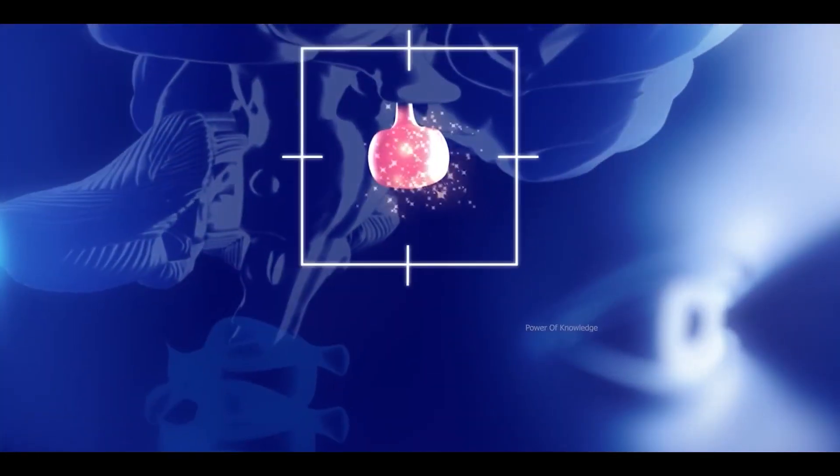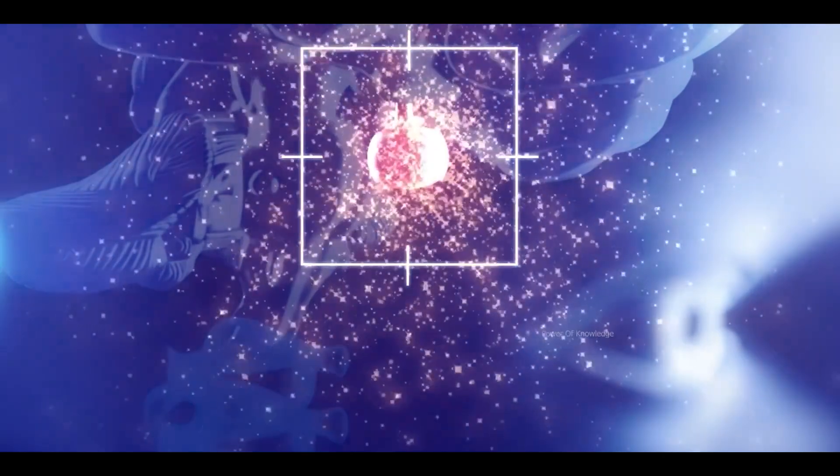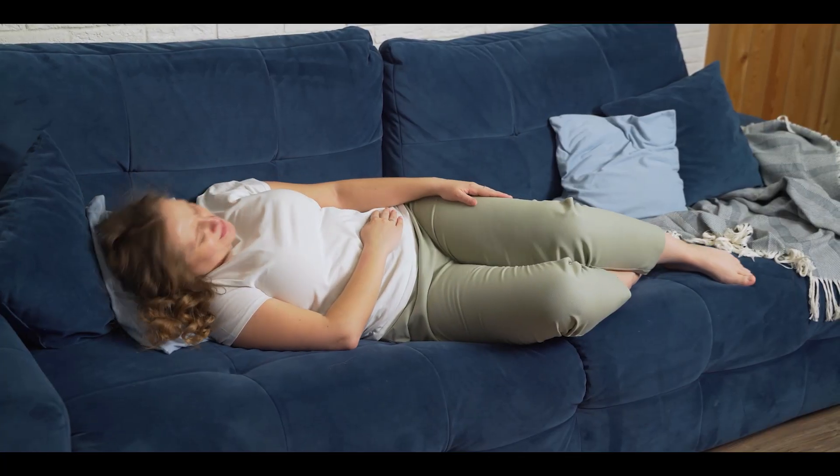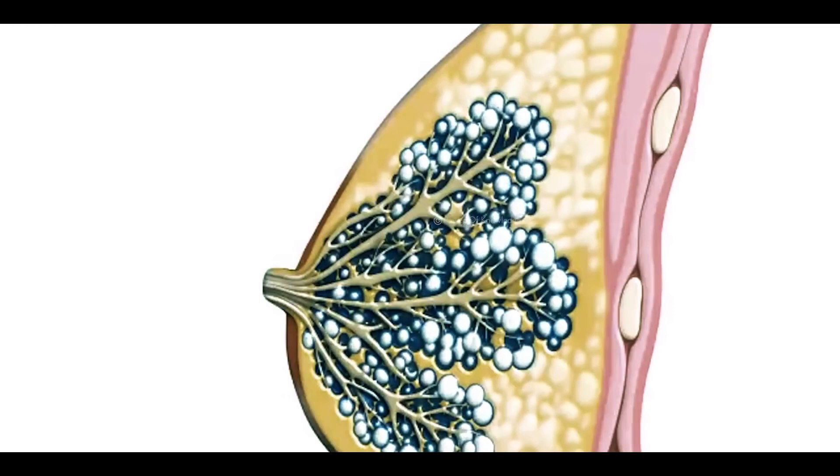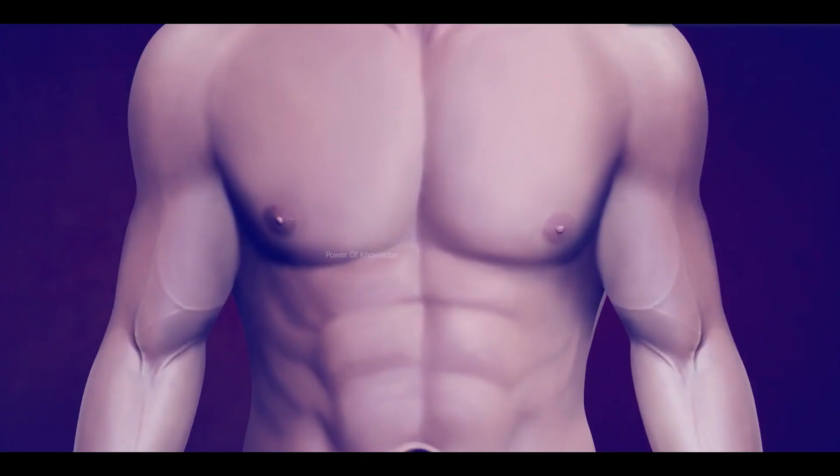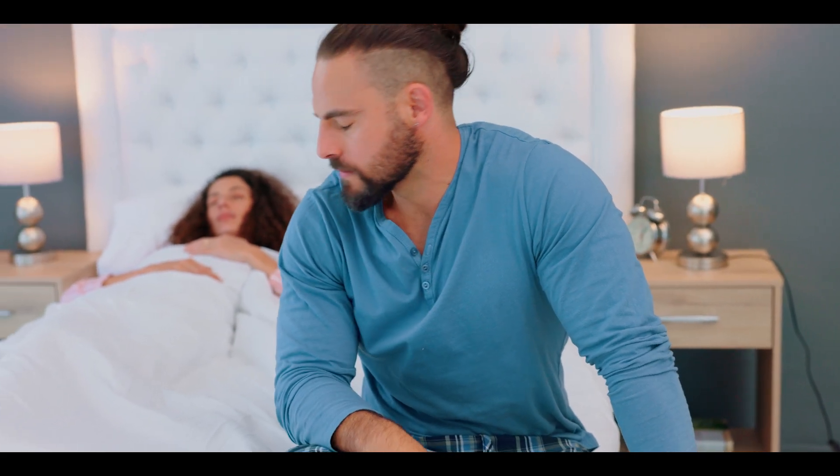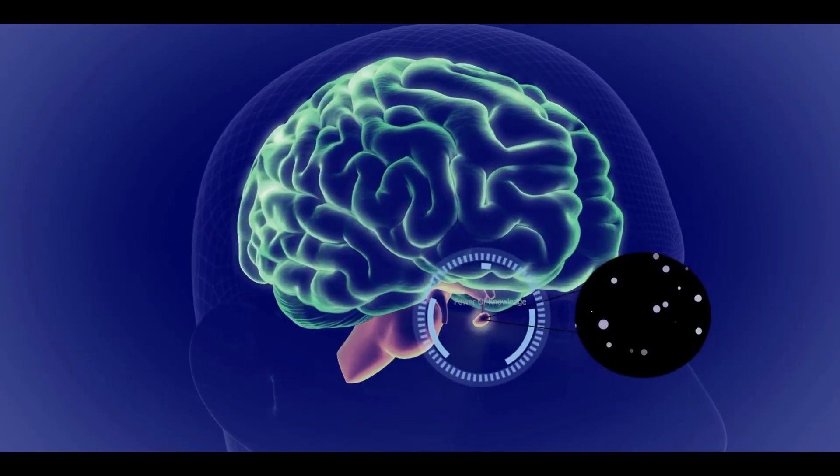Before knowing the cause of high prolactin production, one must know that high prolactin disturbs menstrual cycles in females, and in some cases, milky discharge from nipples. While in males, high prolactin causes breast enlargement, erectile dysfunction, and low production of male hormone testosterone.